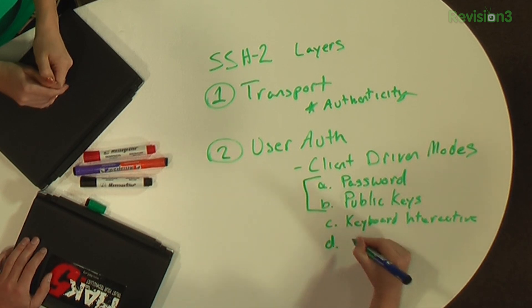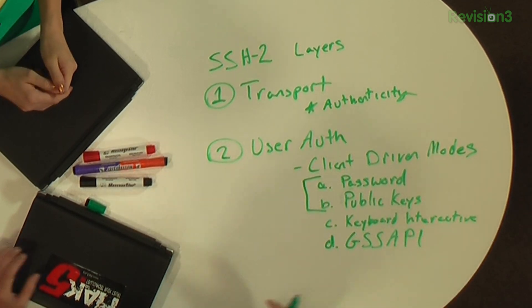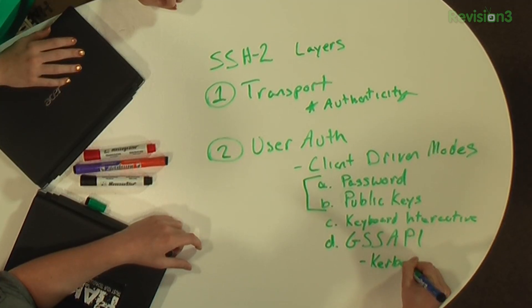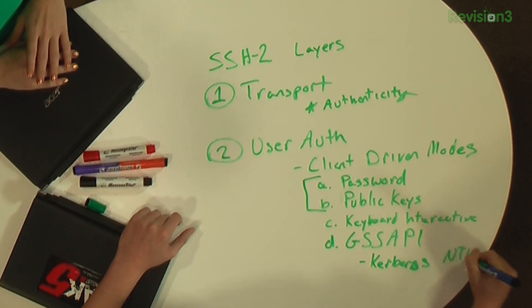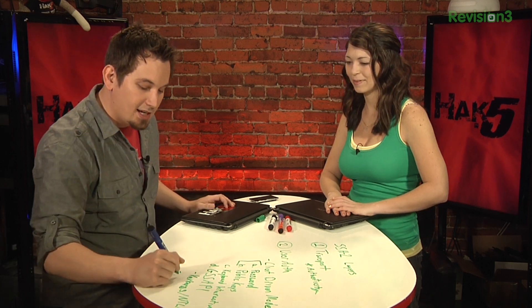Another authentication mode — mostly seen in enterprise environments — is GSS API, which stands for Generic Security Services Application Programming Interface. GSS API is actually just a library; it doesn't do security itself, but it's a way to bring other security mechanisms into the fold. It's typically used for things like NTLM — the authentication Windows uses — which you may recall we've cracked with Ophcrack before. You'll really only see GSS API in enterprise environments to do things like Kerberos or NTLM, for example when integrating with Active Directory.